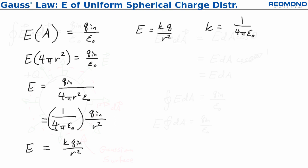And that's basically it. So what this means is that the electric field for a point charge and the electric field for a uniform spherical charge distribution really are the same thing. They have the same mathematical expression.